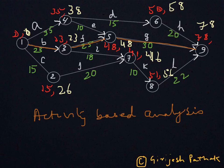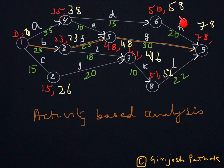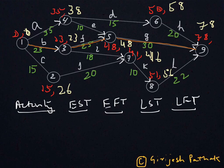Now here we are going to do activity-based analysis, where for different activities we will be finding out the earliest and latest times. Since for an activity there is a start and a finish — unlike events which happen at a single time moment — we will have four measures: Earliest Start Time, Earliest Finish Time, Latest Start Time, and Latest Finish Time. We will calculate all four for different activities. Let us start with activity A.